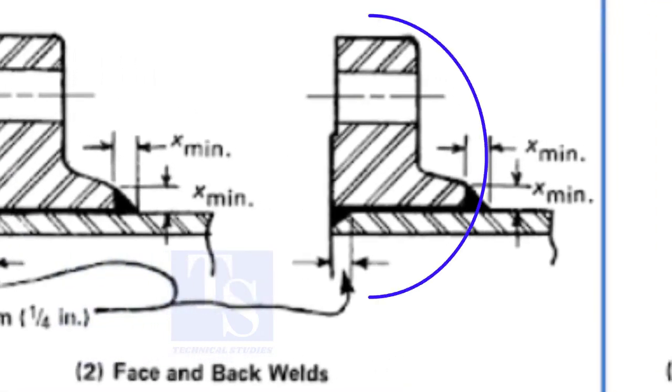In the third method, you can see the face of the pipe and the flange are the same. Here, the end of the pipe is beveled.